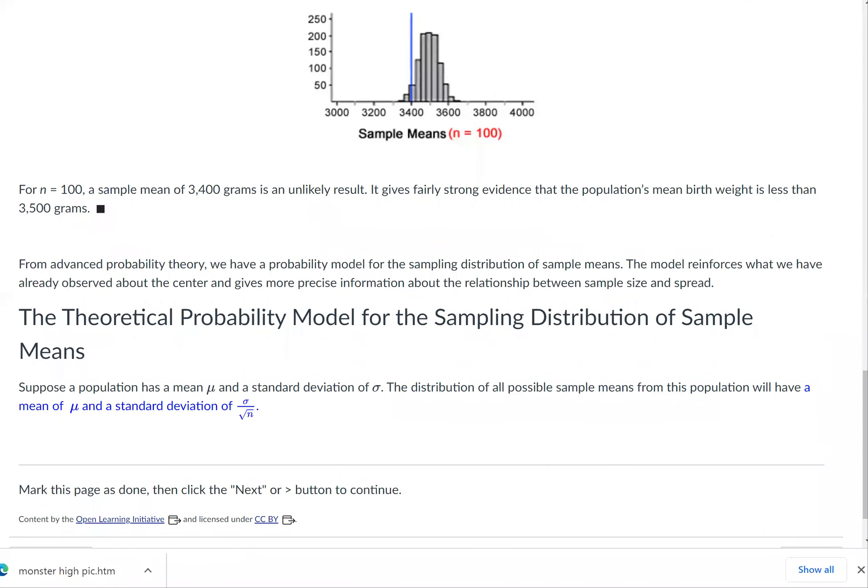For n = 100, a sample mean of 3,400 grams is an unlikely result. It gives fairly strong evidence that the population's mean birth weight is less than 3,500 grams.